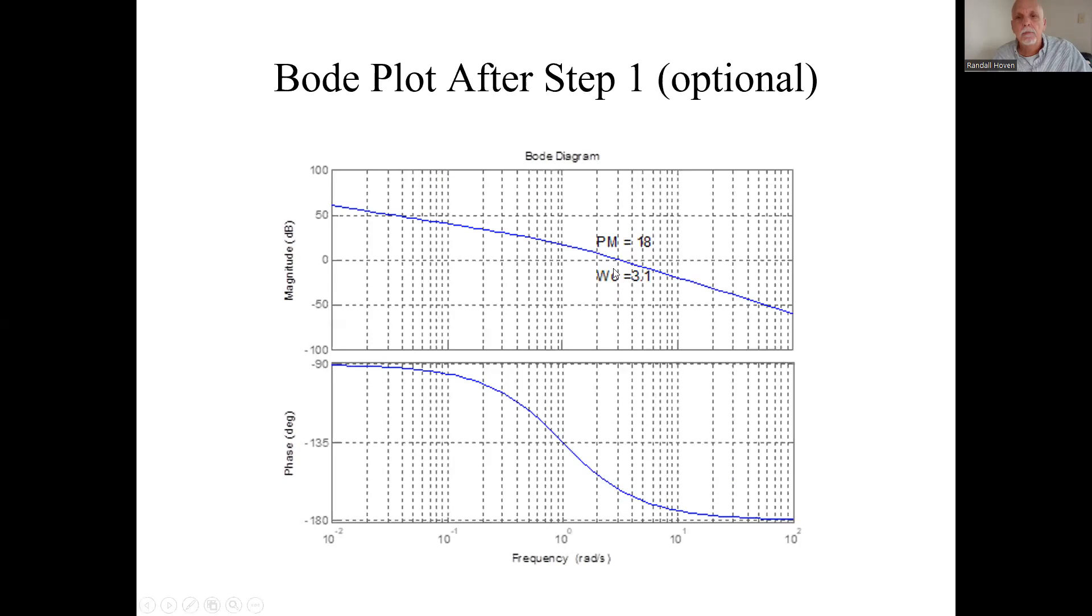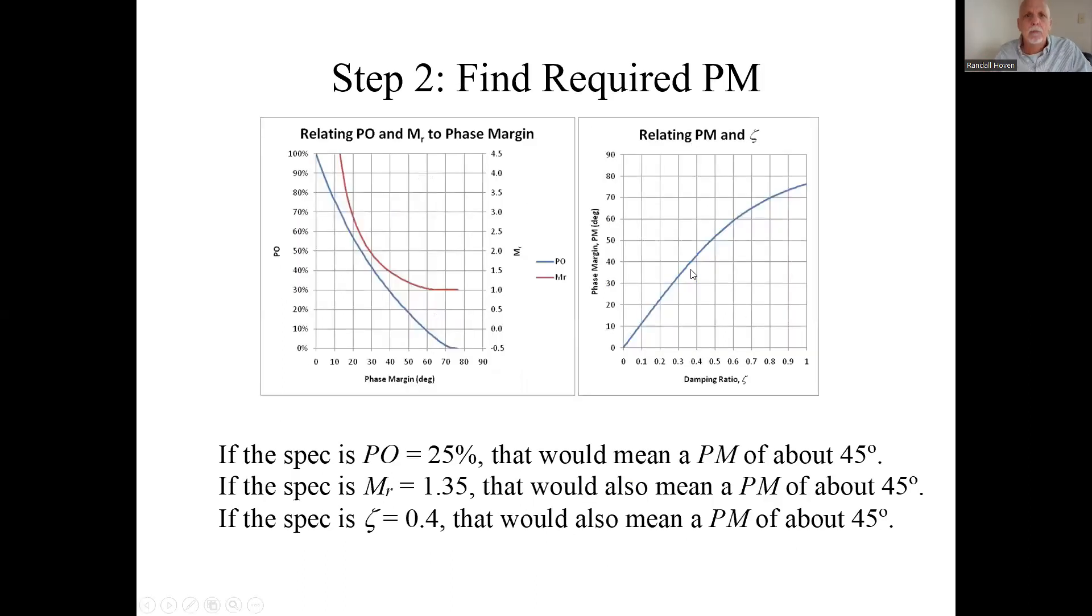Well, after step one we only had a phase margin of 18 degrees. We'll see if that's enough to meet our peak overshoot spec. Step two is to find the required phase margin for a peak overshoot.